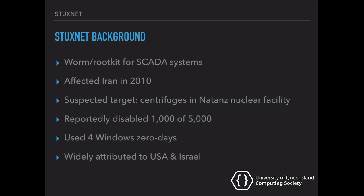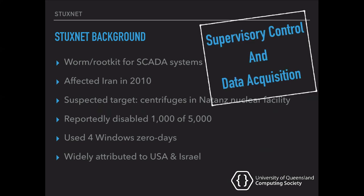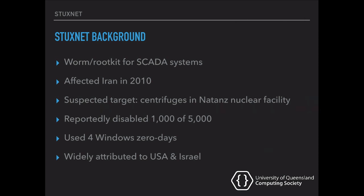At the time, everyone was talking about Stuxnet attacking Iranian centrifuges, but it wasn't often discussed what a centrifuge actually is or why it mattered. That's what we're looking at today. It turns out centrifuges are a critical part of producing nuclear materials. SCADA — supervisory control and data acquisition — is basically industrial control systems: swipe cards in buildings, machines in dams, power plants, centrifuge facilities, all that kind of thing. And that was the particular target for Stuxnet.